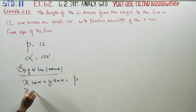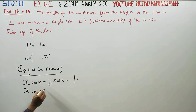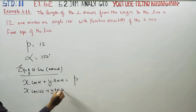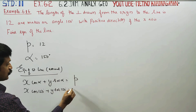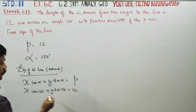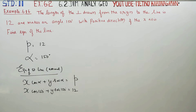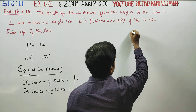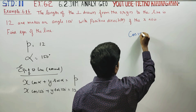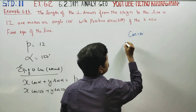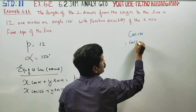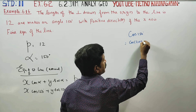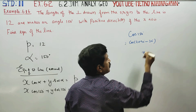x cos alpha, alpha would be 150 degrees, plus y sin alpha, alpha is 150 degrees, is equal to p. Now cos 150 — cos can be written as cos of 2 into 90 minus 30 degrees.